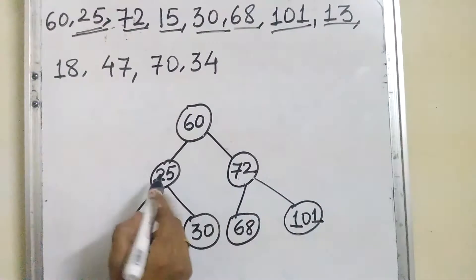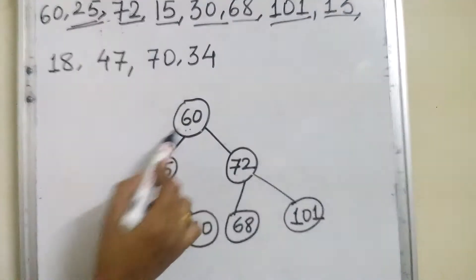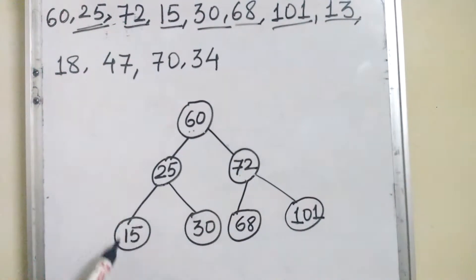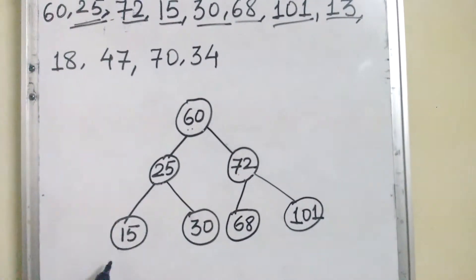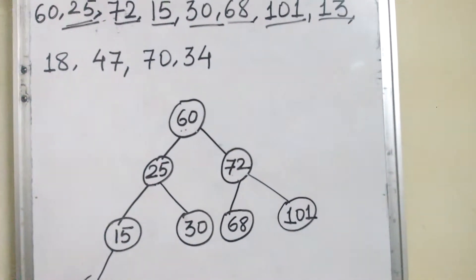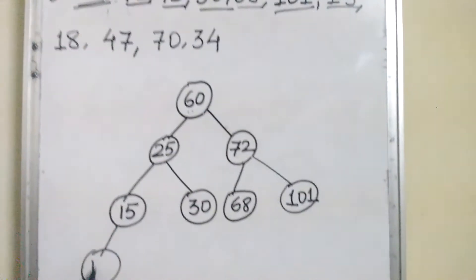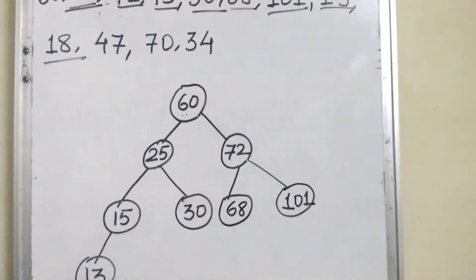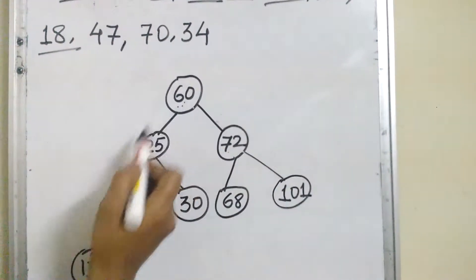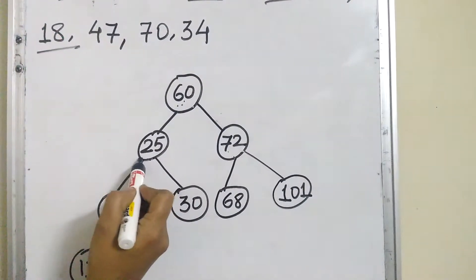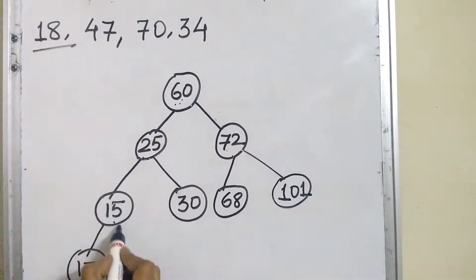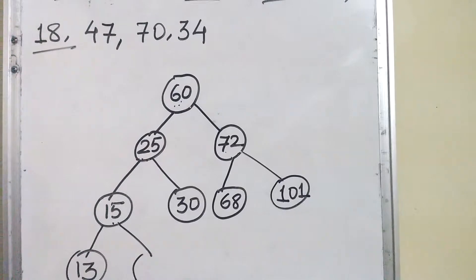Next value is 13. From the root, go left, again left, and again it is less than 15, so it is inserted there. Next value is 18. From the root, go left, left, and then right side of 15.